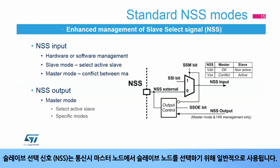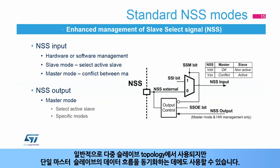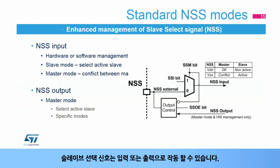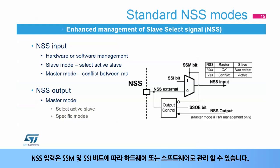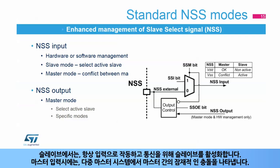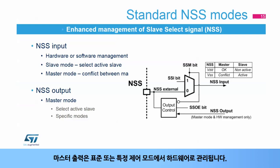The slave select signal, or NSS, is commonly used by the master mode to select the slave node for communication. It is generally used in a multi-slave topology, but it can also be used to synchronize the data flow in a single master-slave pair. The slave select signal can operate either as an input or as an output. The NSS input can be managed externally by hardware or internally by software, depending on the SSM and SSI bits. As a slave, it always works as an input and enables the slave for communication. As a master input, it indicates potential conflicts between masters in a multi-master system. As a master output, it is managed by hardware in a standard or specific control mode.